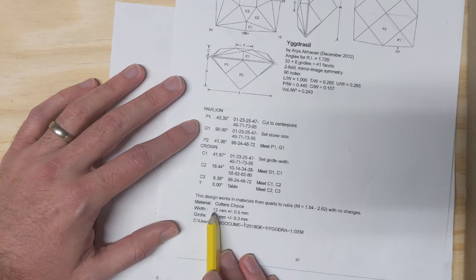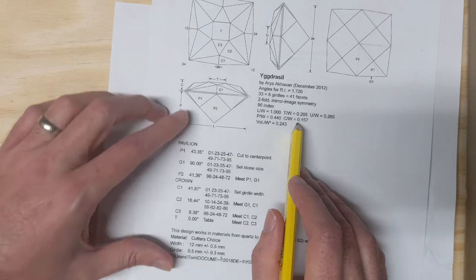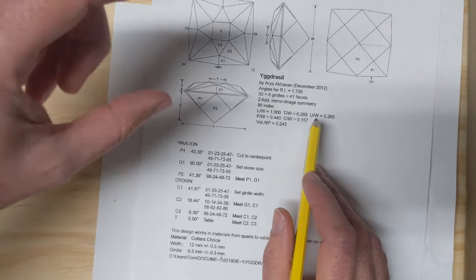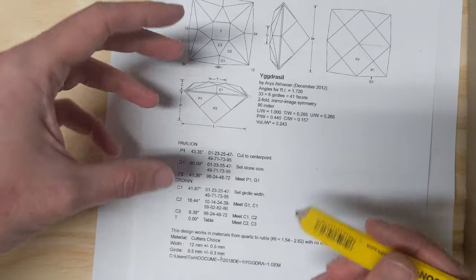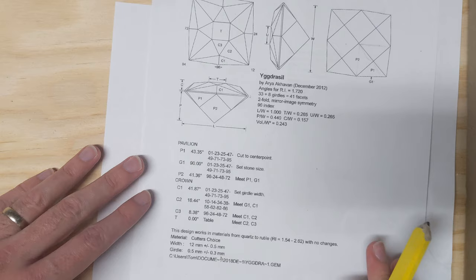Because you know the width has to be 12 millimeters, you can use these ratios to calculate the dimensions of the rough you would need and how far you have to play with the size of the rough you have in order to cut this competition stone.